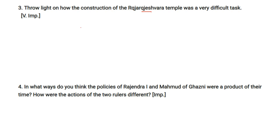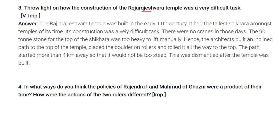The Raja Rajeshwara temple was built in the early 11th century and had the tallest shikhara among temples of its time. Its construction was a very difficult task as there were no cranes in those days. The 90-ton stone for the top of the shikhara was too heavy to lift manually, so architects built an inclined path to the top, placed the boulder on rollers, and rolled it to the top. The path started more than four kilometers away so it would not be too steep, and was dismantled after the temple was built.